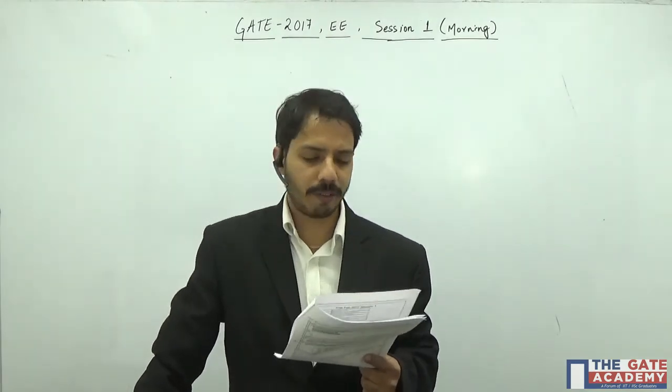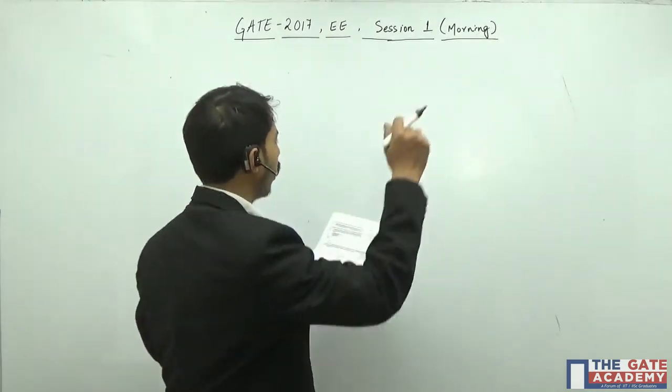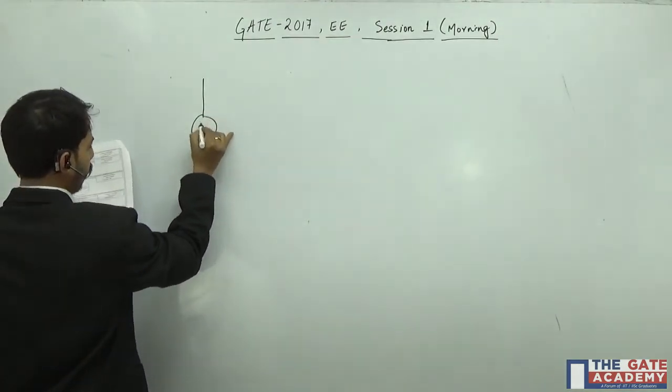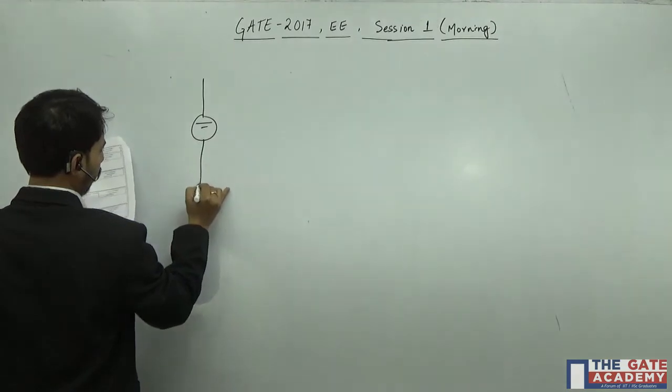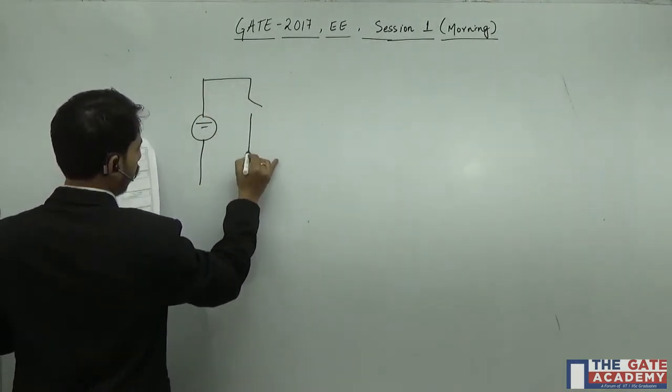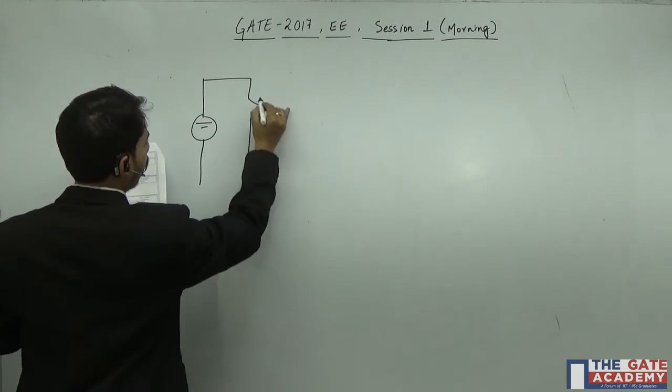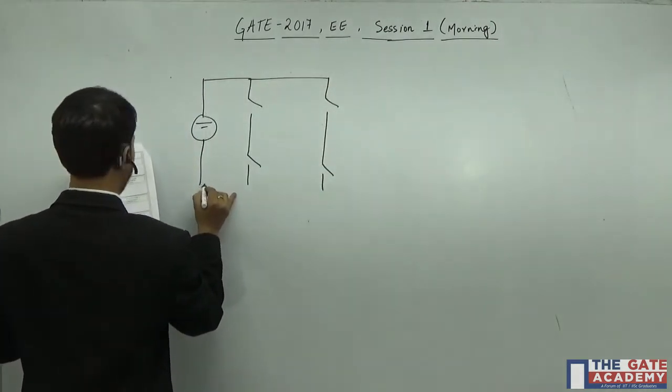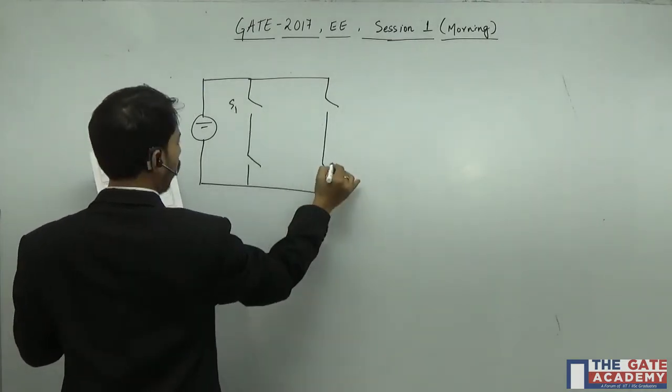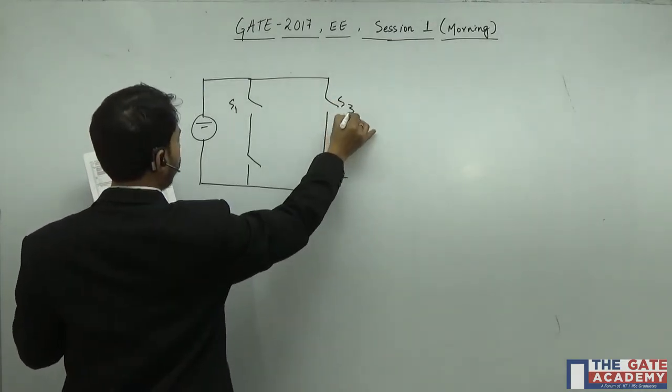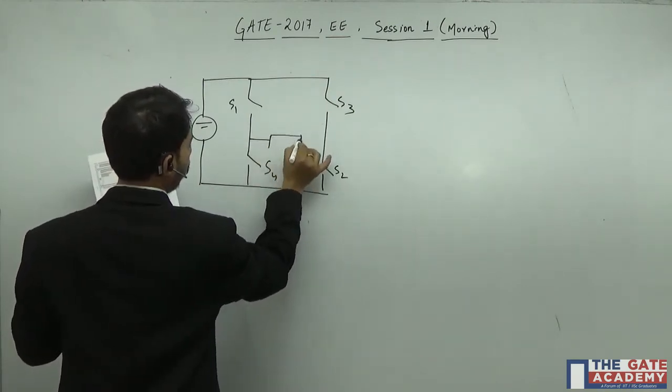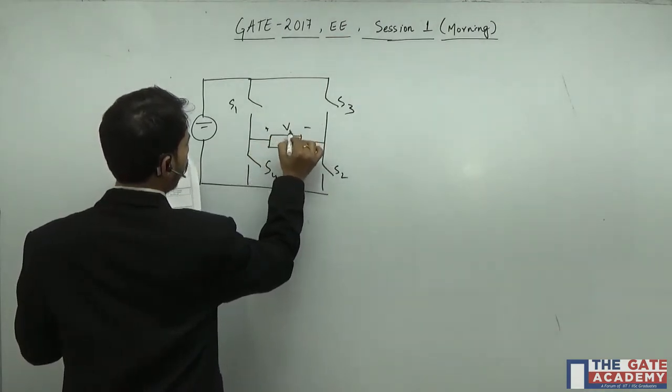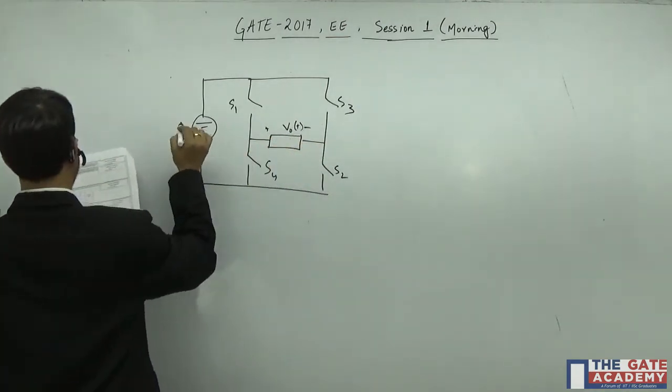The diagram or the waveform that is given is something like this. There are four switches S1, S2, S3, S4, and the load is connected between them. This is my V output.